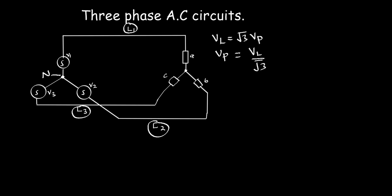To calculate the line current and the phase current, let's look at transmission line 1. When you look at voltage source V1, a current flows from this source through transmission line L1 all the way to load A. It is that same current from the voltage source all the way through the load. So the line current is the same as the phase current for a star connection. The phase current is the current flowing through the load, and the line current is the current flowing through a particular transmission line.